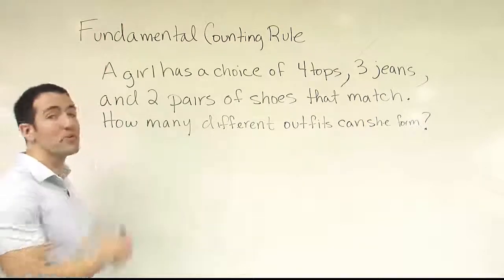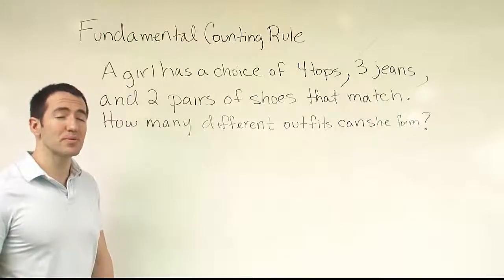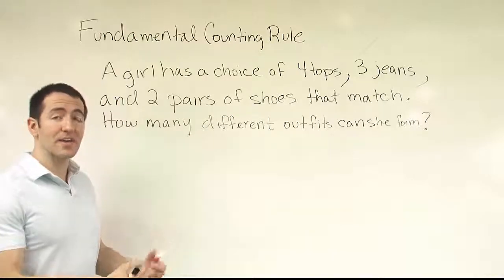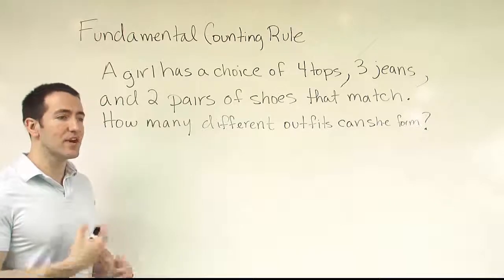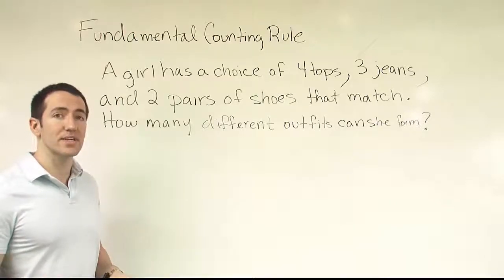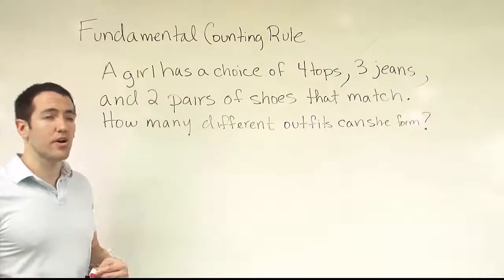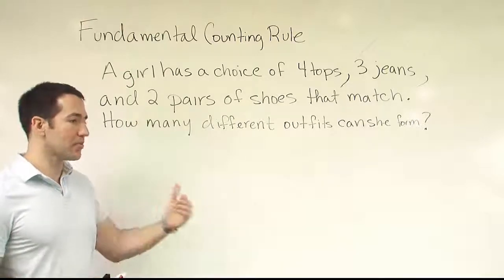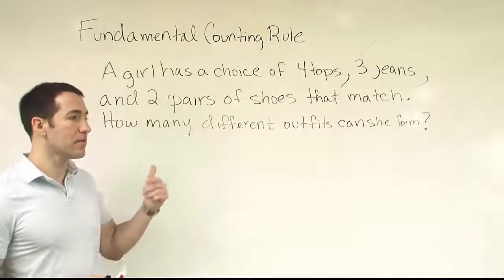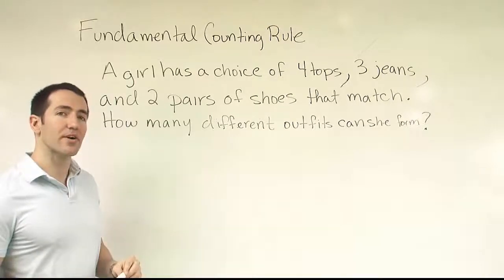The reason why we have to work on counting rules in this course is because when we're working with probability, there'll be some problems where trying to figure it out is very difficult because the sheer number of possible outcomes is just daunting. A good example would be trying to figure out the probability that you would draw a full house when drawing five cards randomly from a deck of cards. The basic probability formula for that would be the number of full houses available divided by the total number of possible five card hands.